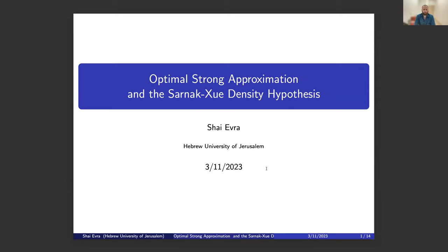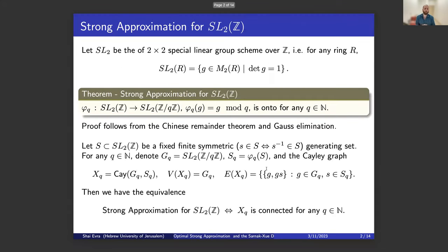Today I would like to talk about a recent new phenomenon discovered by Peter Sarnak called optimal strong approximation, and a way to prove it using the Sarnak-Xue density hypothesis. The optimal strong approximation result is a new type of result which sits in the natural progression of results, starting from strong approximation, passing through super strong approximation. These are results about arithmetic groups, and I'll start with perhaps the prototypical example of an arithmetic group: SL2Z.